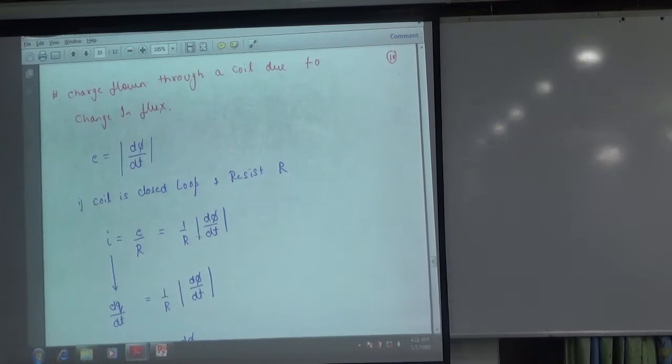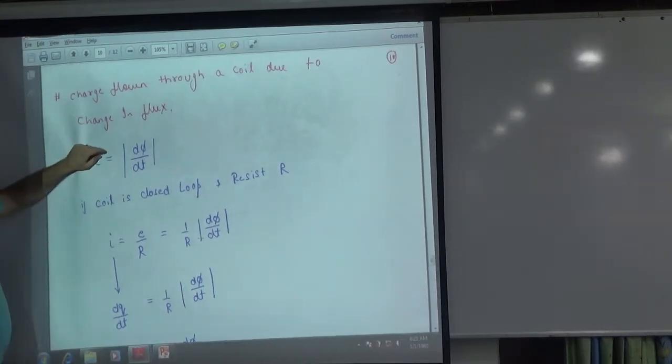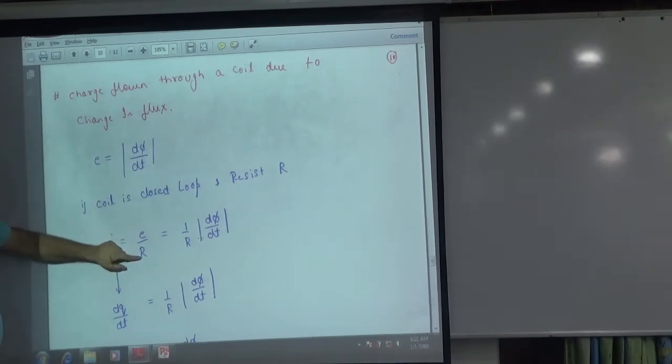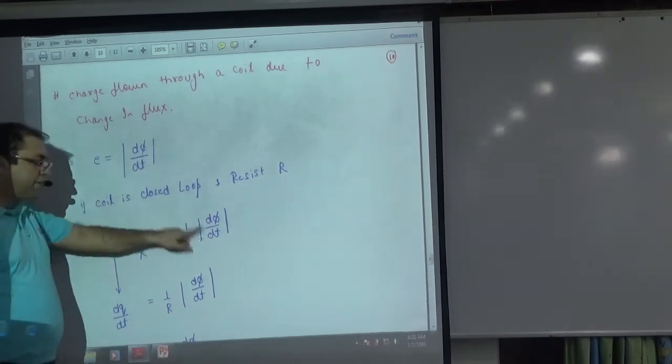So what do I know? What is induced EMF? dΦ by dt. What is current? E by R, which is 1 by R into dΦ by dt.